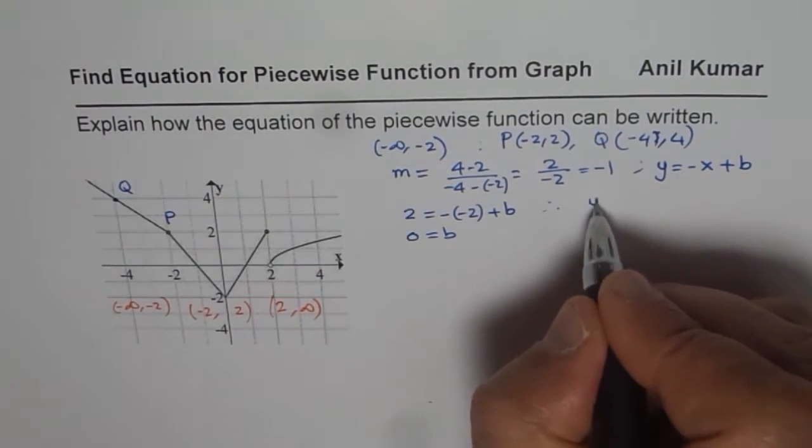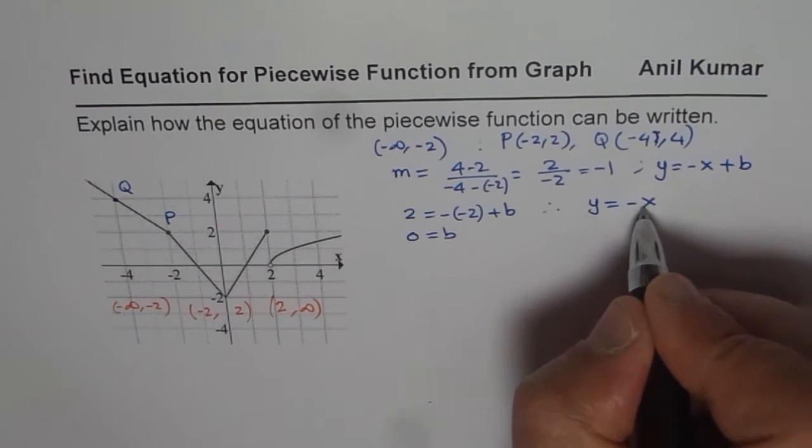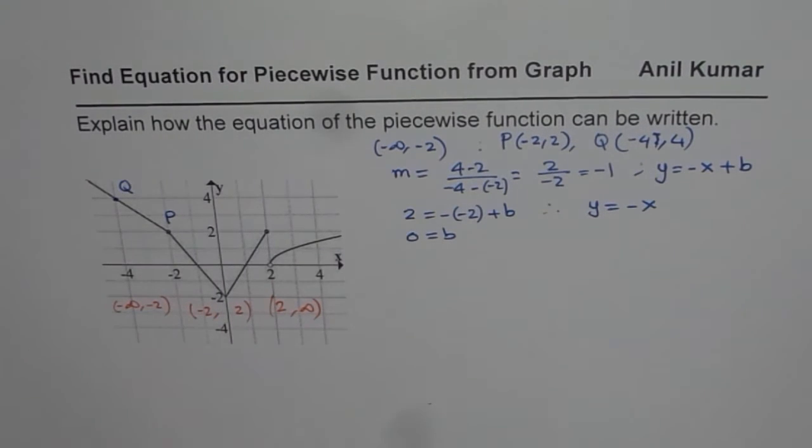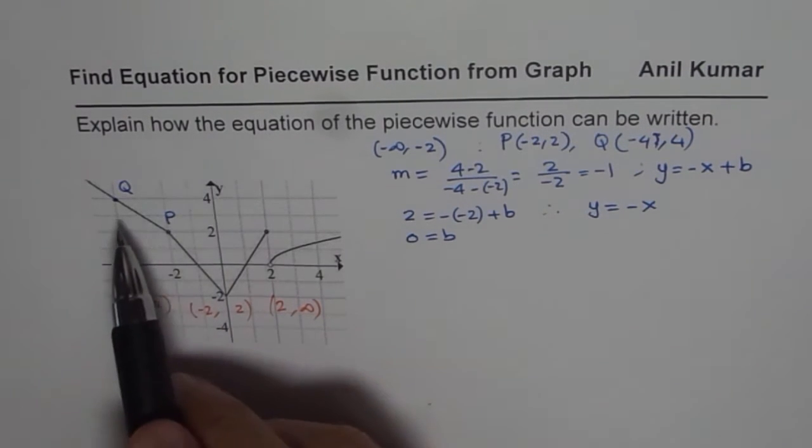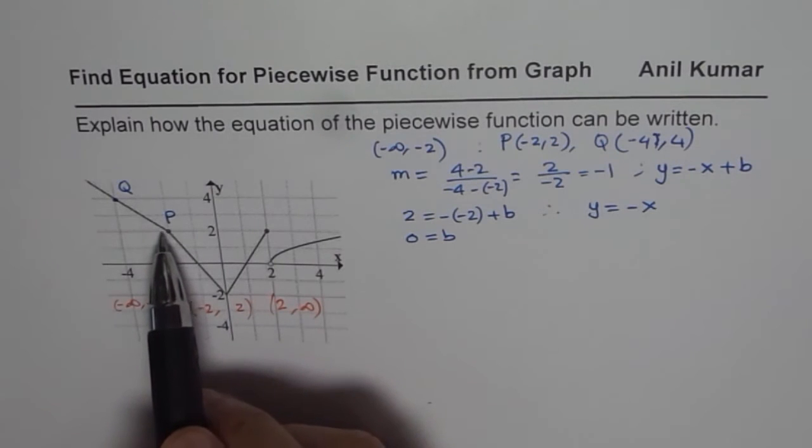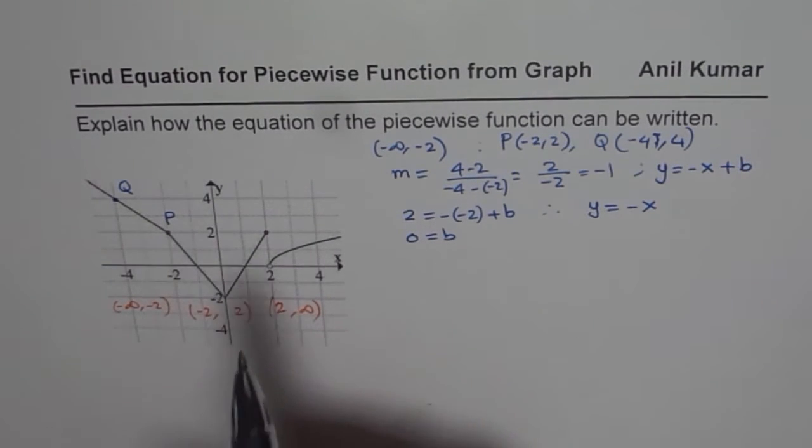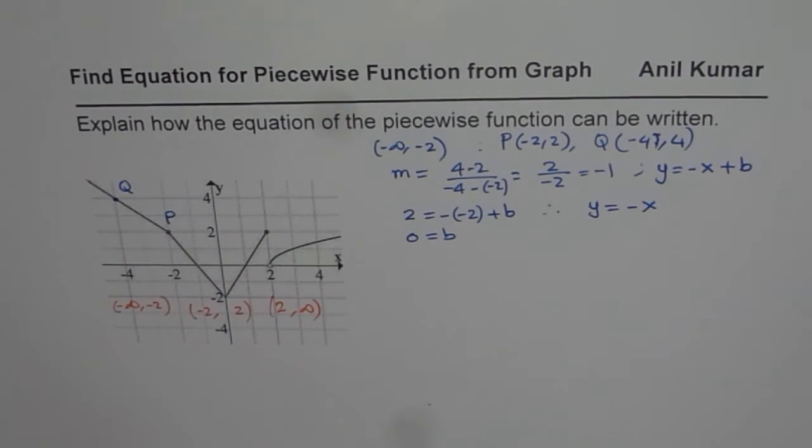And therefore, I get equation as y equals to minus x. So y equals to minus x is my line, which is from minus infinity to minus 2. Now let us consider the next function, which is absolute function.